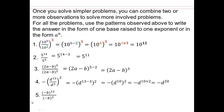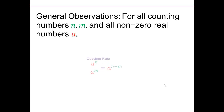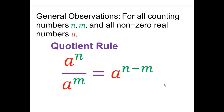Now this negative is part of the base — remember that. If you didn't get it, rewind and watch it over and over again until you really get it. Our general observation is that when you have a to the power n divided by a to the power m, you can take the numerator power and subtract the denominator power.